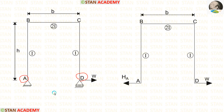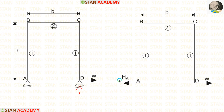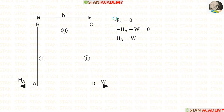No need to calculate the vertical reactions. At point A, we have a hinged support with two reactions — vertical and horizontal — but we already know the vertical reaction is zero, so only the horizontal reaction needs to be calculated. At the roller support D, there is only vertical reaction, which is also zero. So in this frame, we have to find only one reaction: the horizontal reaction at point A. Let us assume it is acting on the left side; if our assumption is wrong, we can change it later.